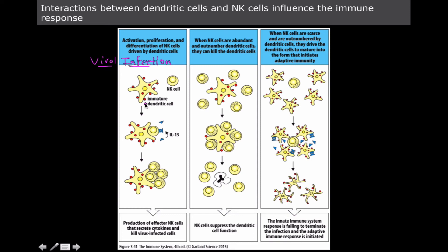Dendritic cells presenting antigens on their surface cause differentiation of natural killer cells, because natural killer cells identify pathogen-associated molecular patterns. Dendritic cells also produce interleukin-15 — similar to macrophages — which makes sense because dendritic cells and macrophages are closely related: both are phagocytic and both undergo antigen presentation. So in a viral infection, dendritic cells are recruiting natural killer cells to differentiate and fight off the infection.